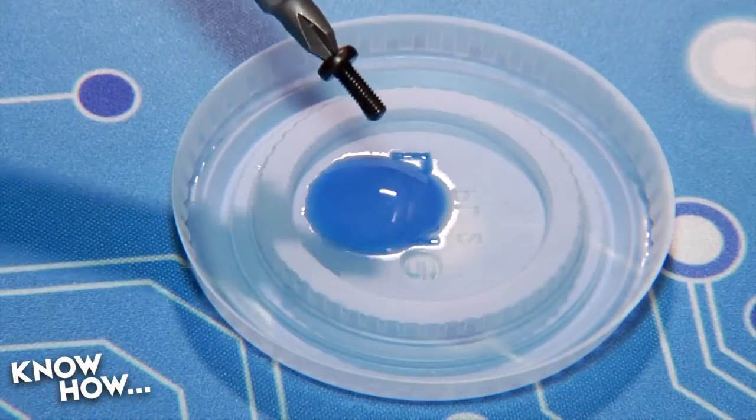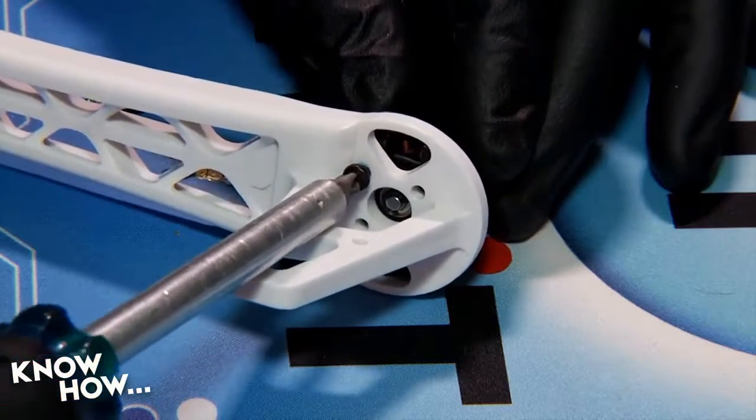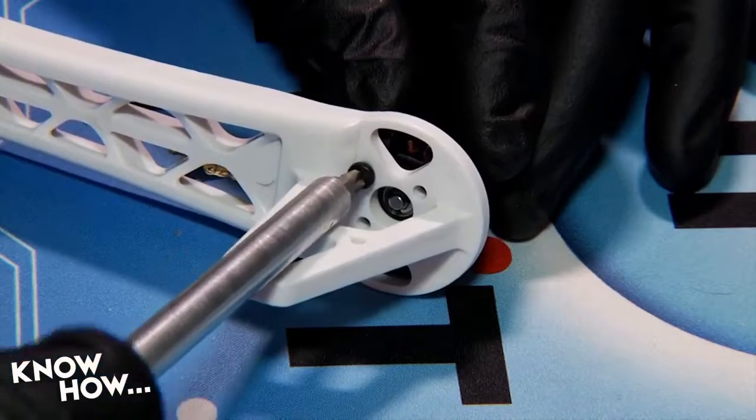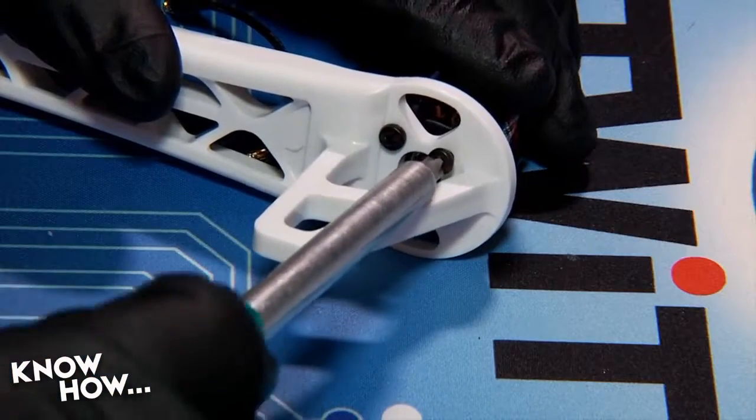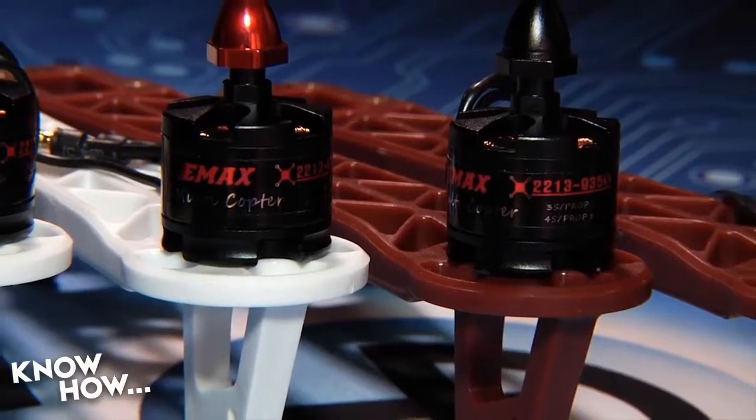Apply a very thin dab of Loctite Blue on each screw to prevent them from vibrating loose. Repeat the process for all four arms. Arm number three gets the other black cap clockwise turning motor, while arms two and four get the two red cap counter-clockwise turning motors.